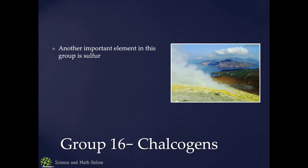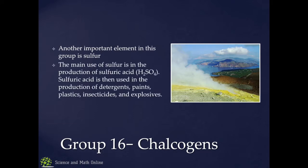Another important member of this group is sulfur. It naturally occurs around volcanic vents — you can see the yellow stuff on the ground. Its main use is in making sulfuric acid, which is one of the most common industrial chemicals used to make detergents, paints, plastics, insecticides, explosives, and many other things.